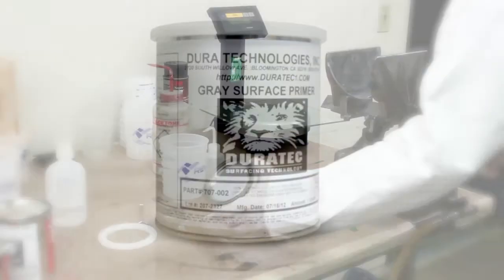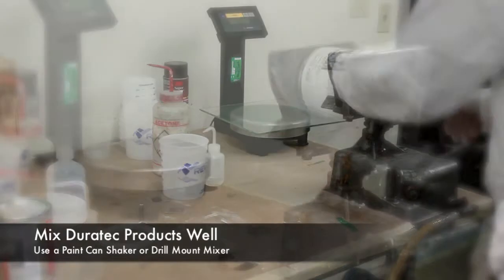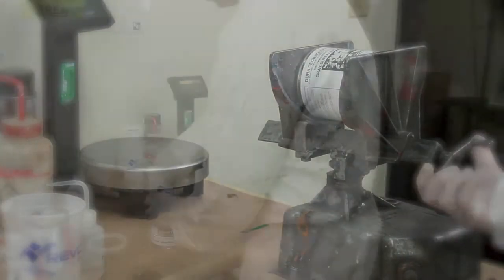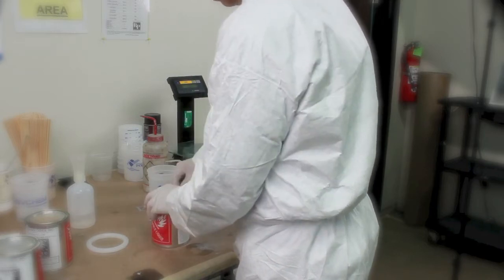This is Duratec gray polyester surfacing primer. It's necessary to mix Duratec before you use it. We recommend either using a paint shaker, or using a drill-mount mixer. Usually a stick or a paint paddle isn't going to be enough.